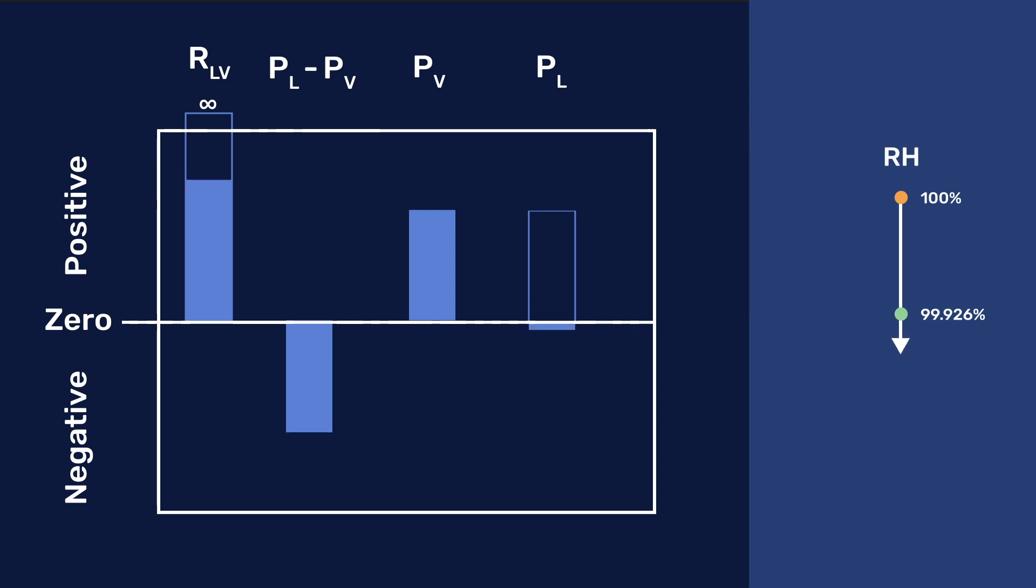The liquid will cavitate, that is, bubbles of vapor will form if PL reaches about minus 100 MPa, corresponding to RH equals about 47.7%, and RLV is about 1.4 nm. The length of the bar for PL would then be about 1000 times larger than PV, and therefore cannot be well displayed on this graph.